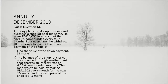The question states that Anthony plans to take up business and purchase a shop lot near his home. He saves RM 10,000 in an account that pays an interest of 6% compounded every 4 months. Four years later, he withdrew all his money to pay for the down payment of the shop lot. First, for 3 marks, find the value of the down payment. Second, for 5 marks, the balance of the shop lot's price was financed through another bank that charges an interest rate of 4.25% compounded monthly. The loan was to be paid by making RM 1,502 every month for the next 15 years. Find the cash price of the shop lot.